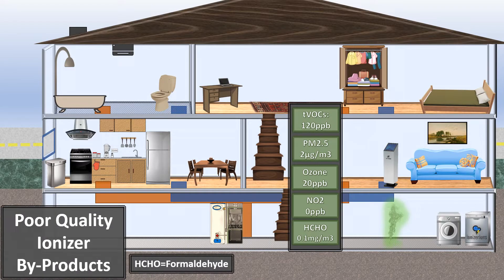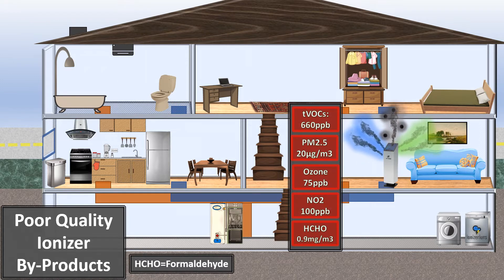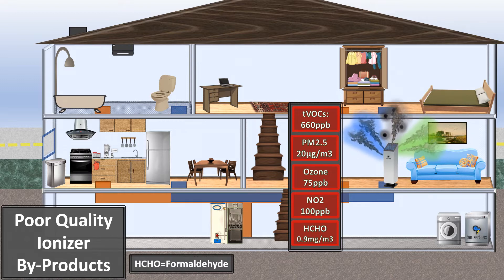Poor quality ionizer byproducts. When a volatile organic compound goes through a poor quality ionizer, it will make your air worse. Your total volatile organic compounds can go up. Particles can be created from chemical reactions. Ozone can go up, nitrogen dioxide can go up, formaldehyde can go up. When your air gets worse, this is a sign that your ionizer is of poor quality.